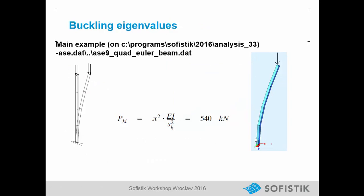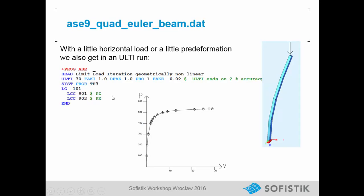Now some additional remarks on buckling eigenvalues. The best example is in the ASE folder: ASE 9 quad Euler beam, where we can calculate the critical Euler load by hand — 540 kN. If we make a load increase and apply a little horizontal load, we can get this load-deformation curve where we also end at 540 kN.